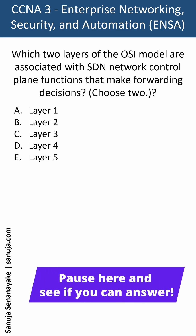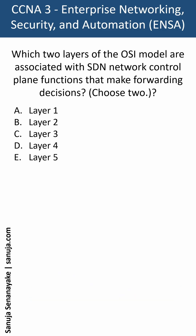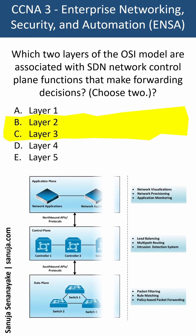Remember, SDN is software defined networking. In software defined networking, there are three planes, and what we are looking at here is the control plane functions that make forwarding decisions. In the OSI model, the control plane functions are basically layer 2 and layer 3. So the answers are B and C.